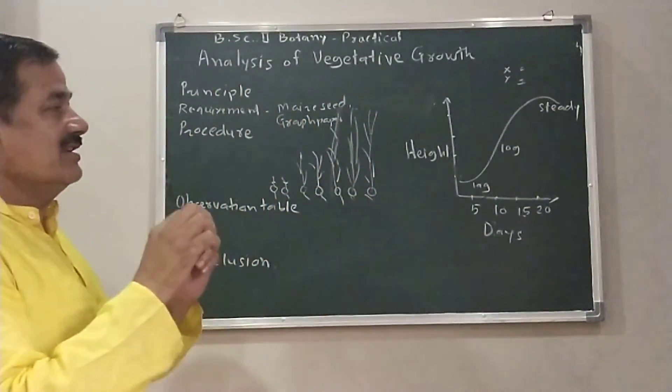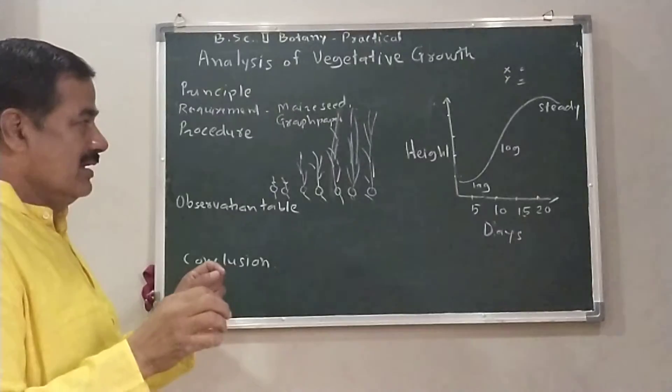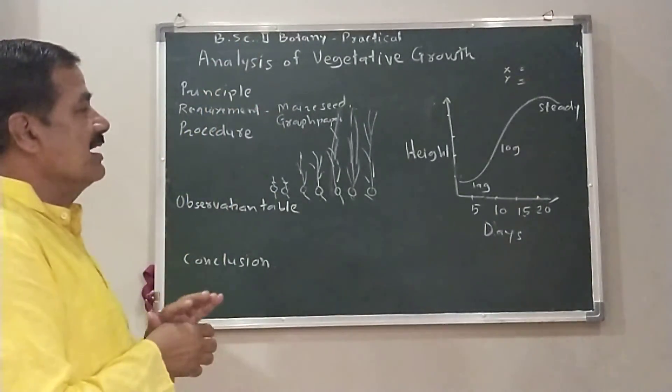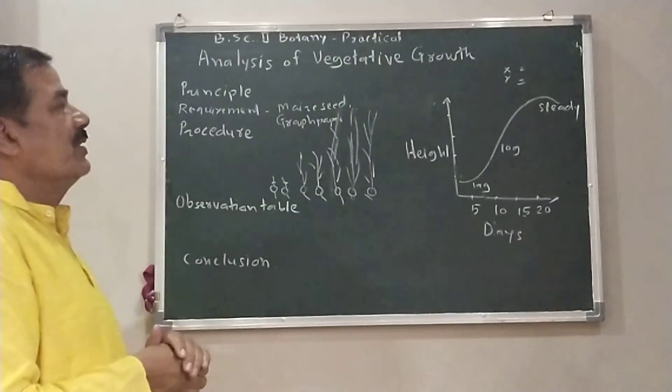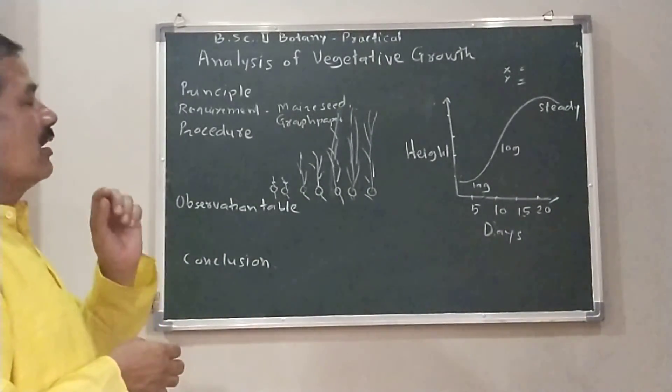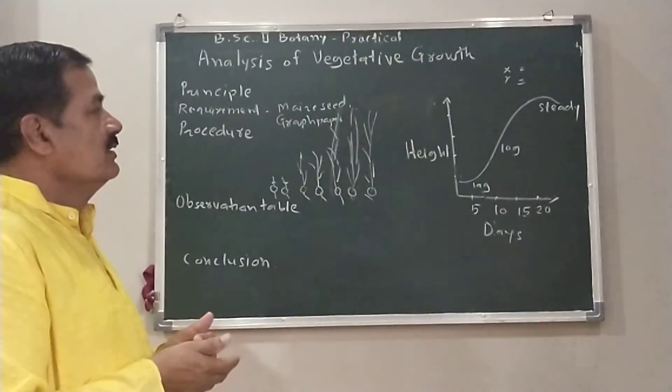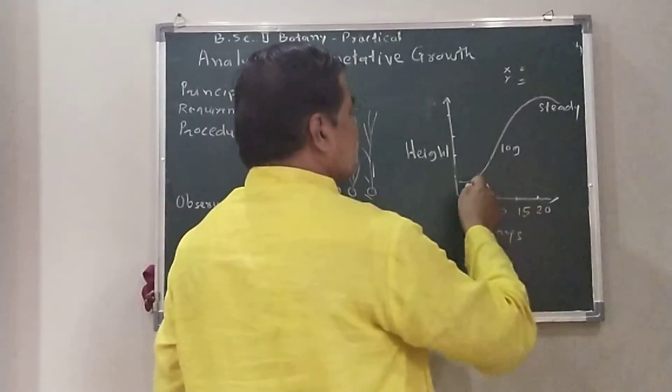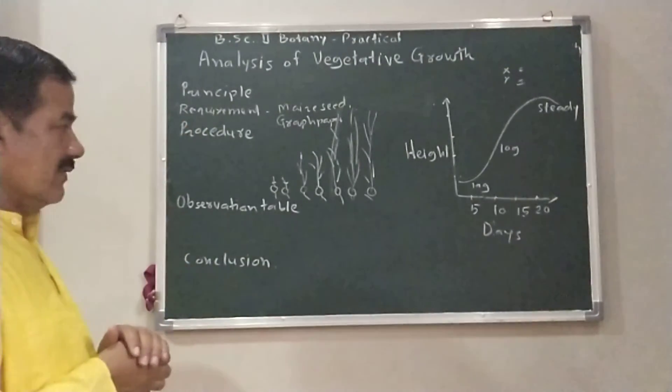And it remains steady. The cell becomes mature. In conclusion, each and every plant organ, plant, or living organism shows the sigmoid curve - that is S-shaped or sigmoid curve.